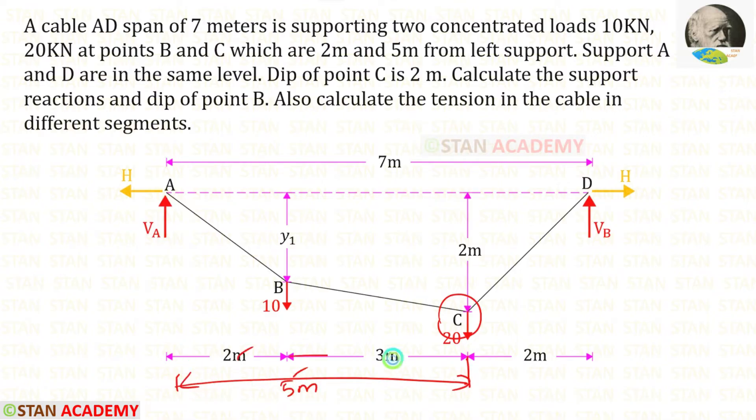5 minus 2 we will get 3. The total span is 7. So 7 minus 5 we will get this length which is 2. Dip of point C is 2 meters.